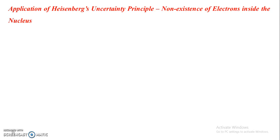Heisenberg's uncertainty principle states that we cannot simultaneously specify the position and momentum of a microscopically small particle. That is, there will be some minimum uncertainty. If we try to specify the position of a microscopic particle with a certain accuracy, then there will be some uncertainty in its momentum, and vice versa — if we specify the momentum with a certain accuracy, there will be some uncertainty in its position.